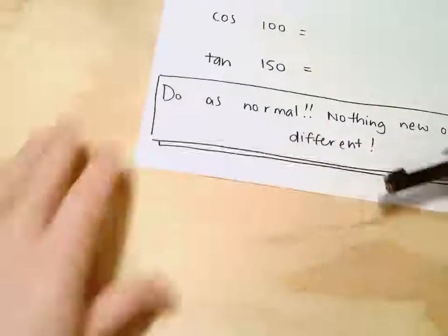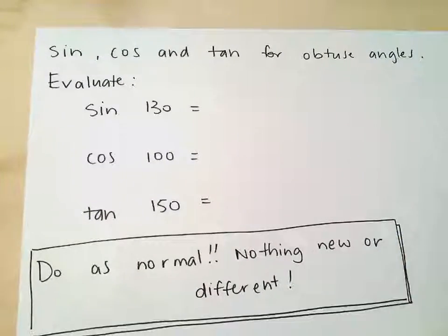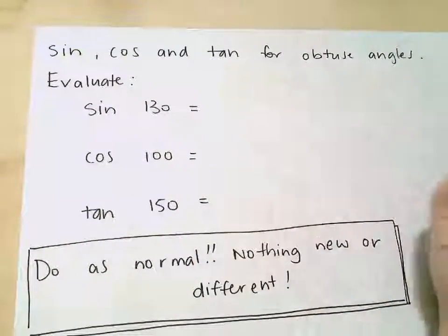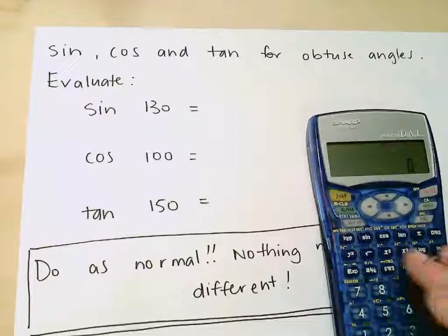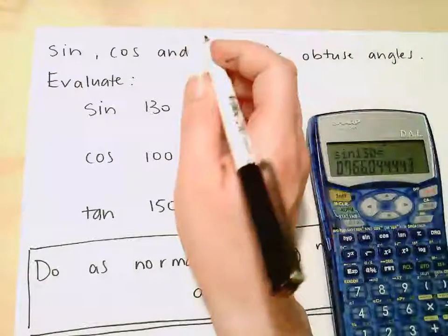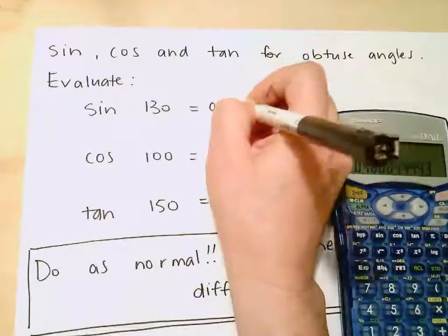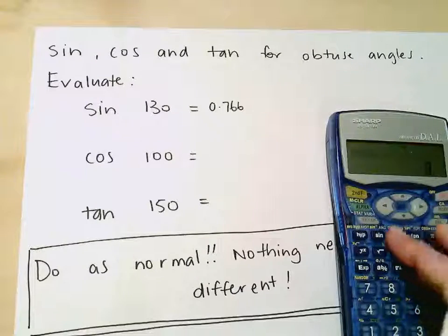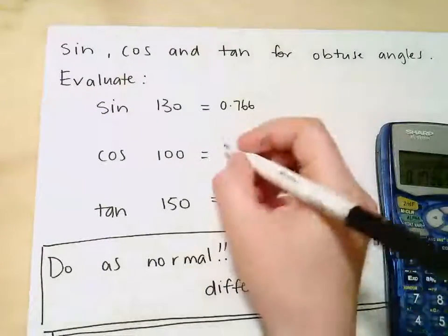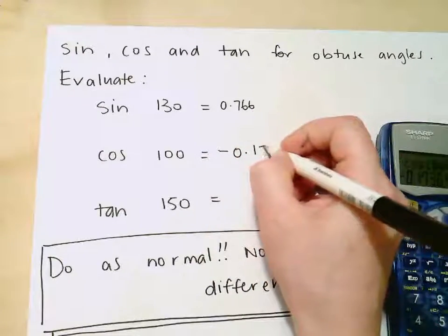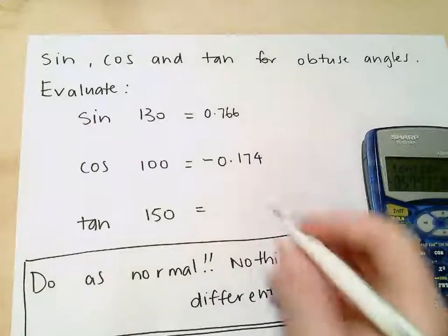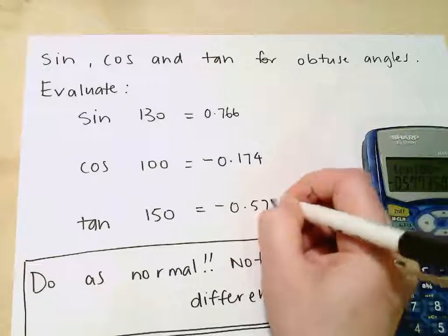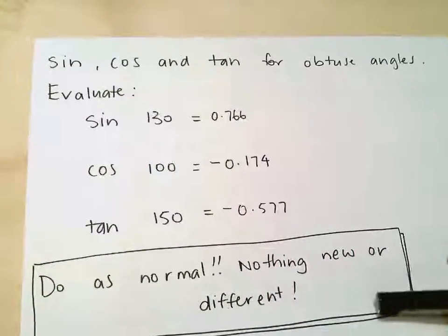The next thing you need to be able to do is evaluate sine, cos, and tan when given obtuse angles. This is actually really straightforward — you just do everything exactly as you normally would. You literally just put it into your calculator as normal: sin 130 gives 0.766, cos 100 gives negative 0.174, tan 150 gives negative 0.577.